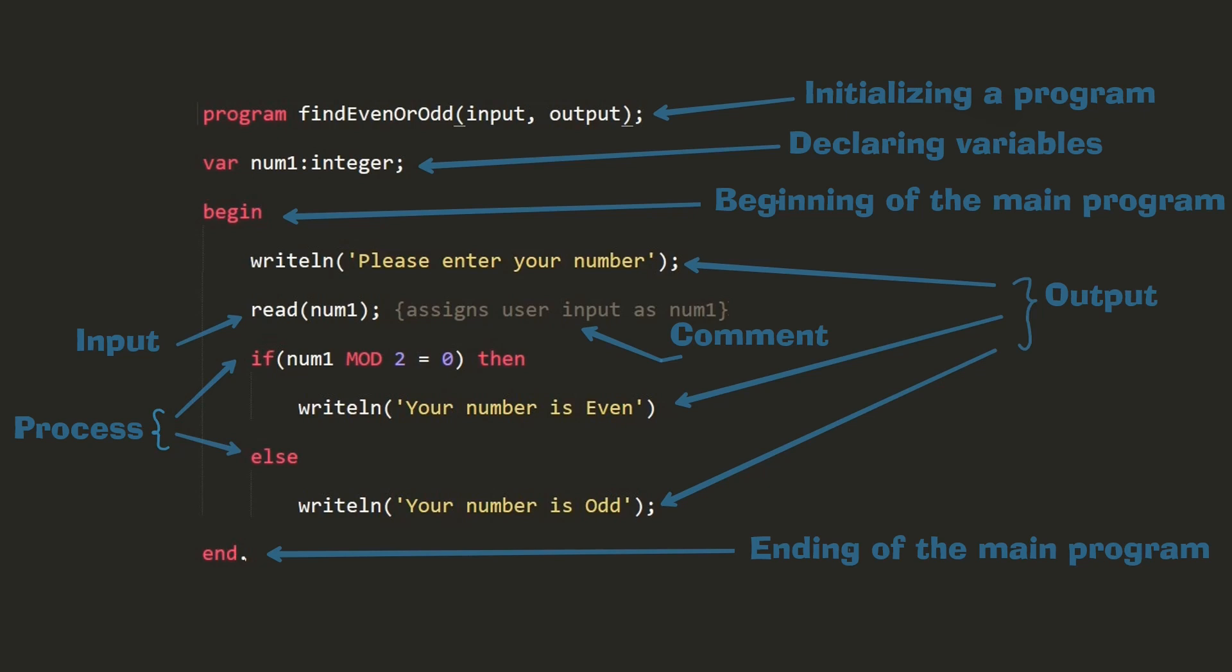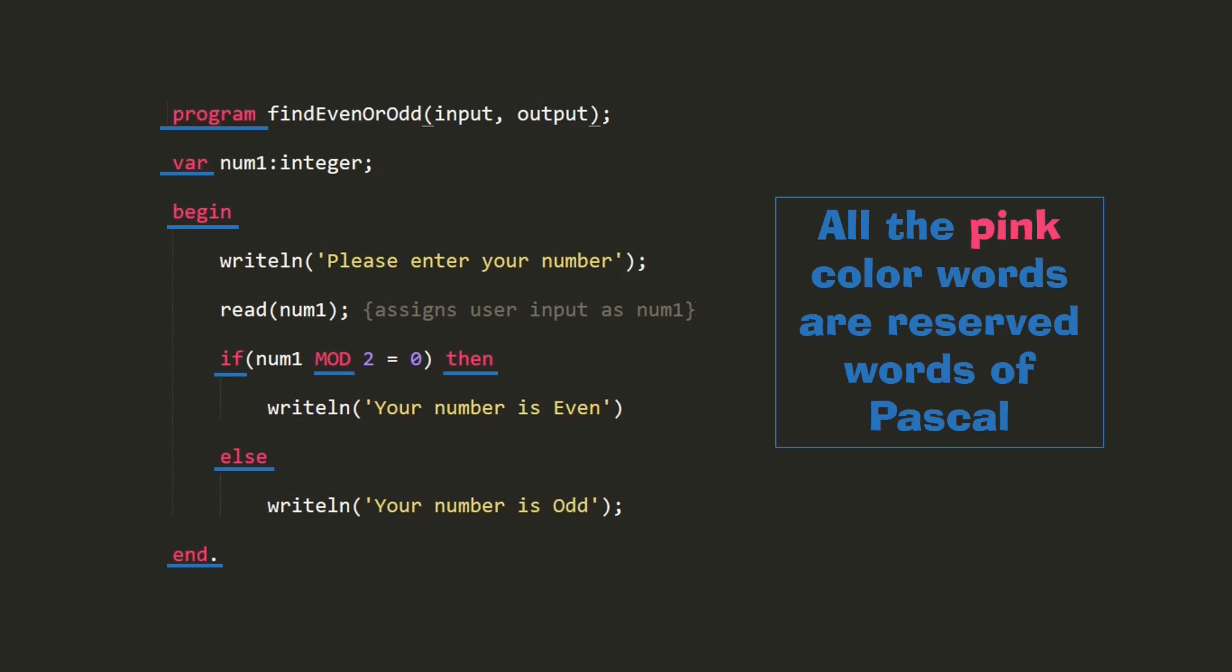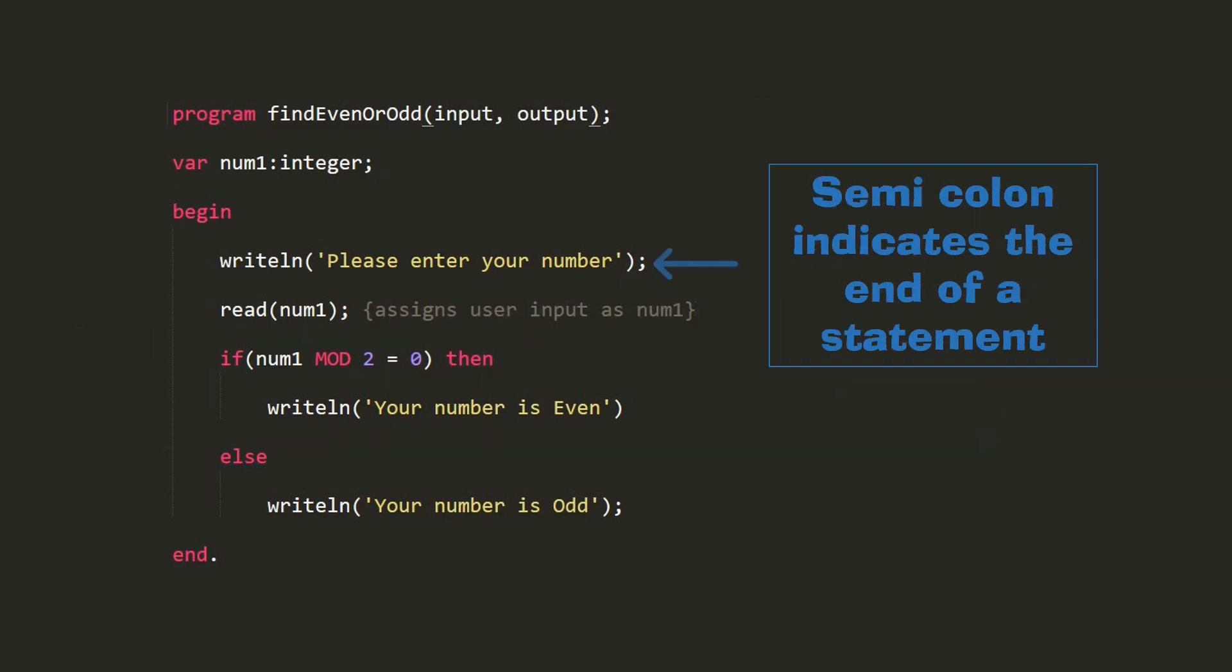Those are the main components of a simple Pascal program. I have displayed all of them on screen. All the pink colored words on screen are reserved words which cannot be used as identifiers.